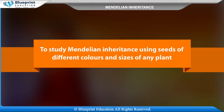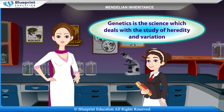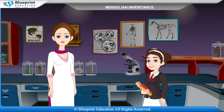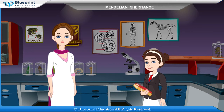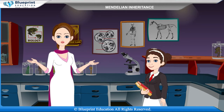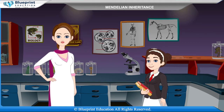To study Mendelian inheritance using seeds of different colors and sizes of any plant. Genetics is the science which deals with the study of heredity and variation. The genetic constitution of an organism with regard to one or more characters is called its genotype.